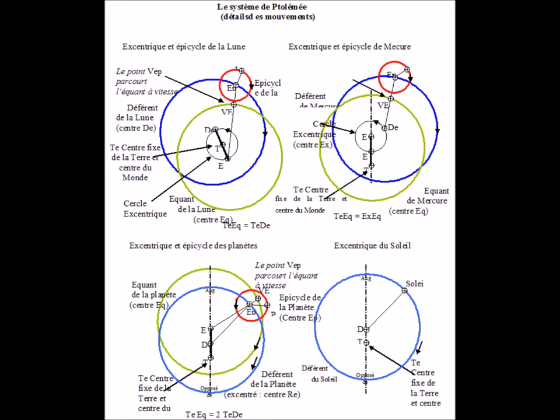The center of the deferent of the moon describes a circle centered on the center of the world. The deferent of Mercury is centered on the circle whose center is near the center of the world and the radius equal to half the distance from its center to the center of the world.